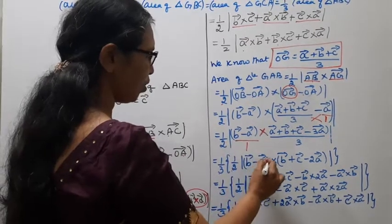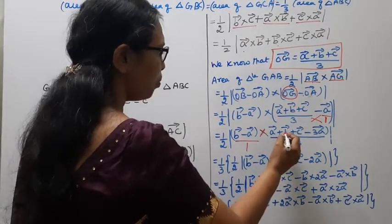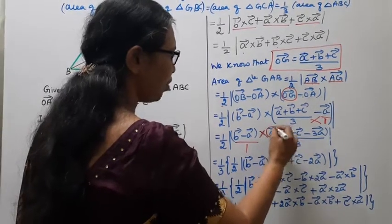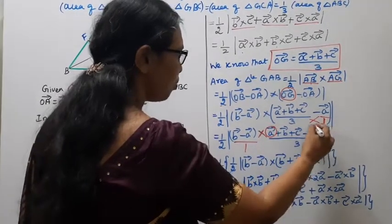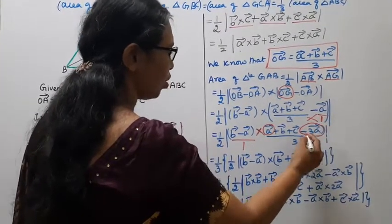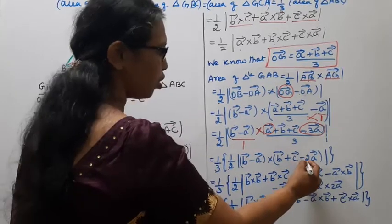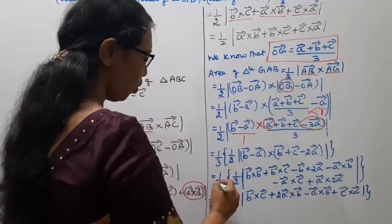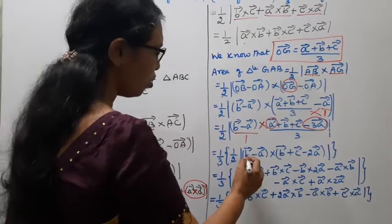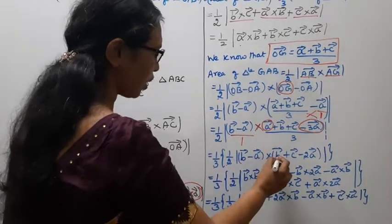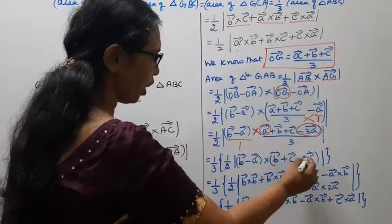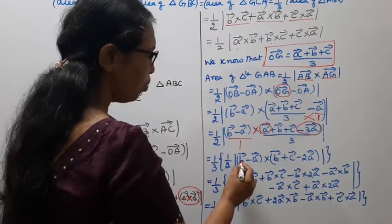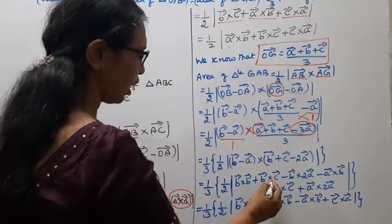Expanding: one-third times one-half times mod of (B vector minus A vector) cross (B vector plus C vector minus 2A vector). Expanding the cross product: B vector cross B vector plus B vector cross C vector, plus B vector cross (minus 2A vector).